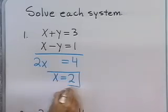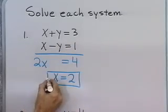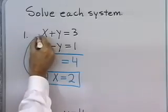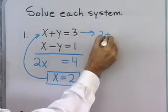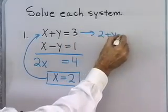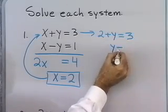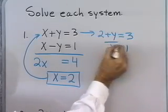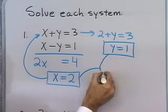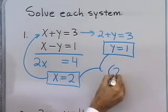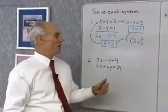This is the x-coordinate of the point where the two graphs intersect. I'll take that value of x, substitute it back into either equation, and solve for y. 2 plus y is equal to 3, so y is equal to 1. That's the y-coordinate at the point where those two graphs intersect. The solution to that system is x equal to 2, y equal to 1.